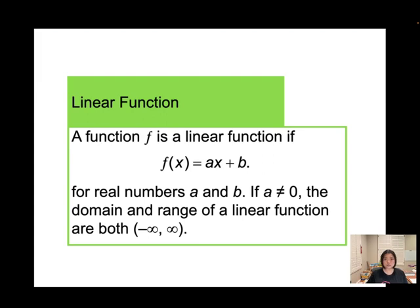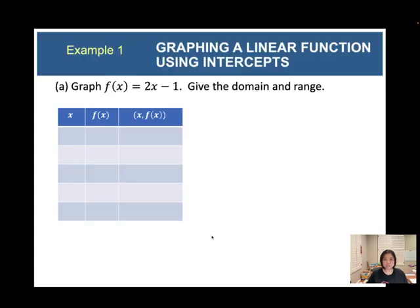For this session you need to know how to graph linear functions. Let's graph f(x) = 2x minus 1. After you graph the function, find the domain and the range. For x, you can plug in any value. I'll plug in x = 0: 2 times 0 is 0, minus 1 gives negative 1. So we have the ordered pair (0, negative 1).